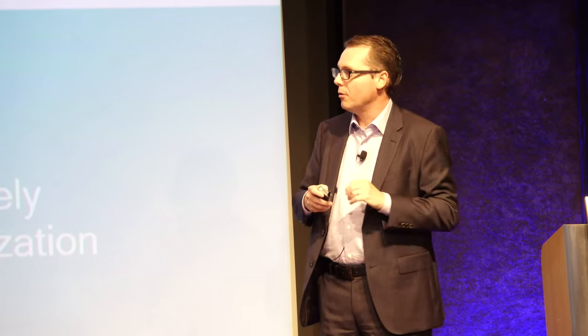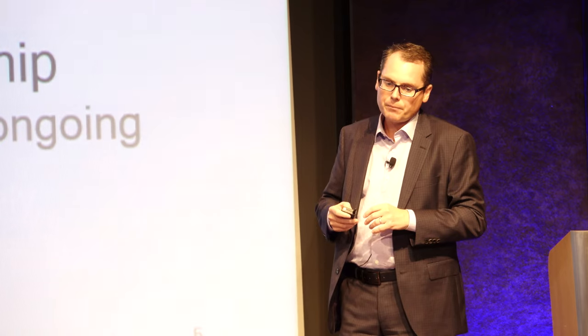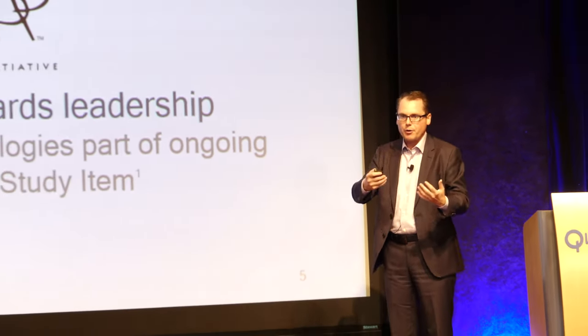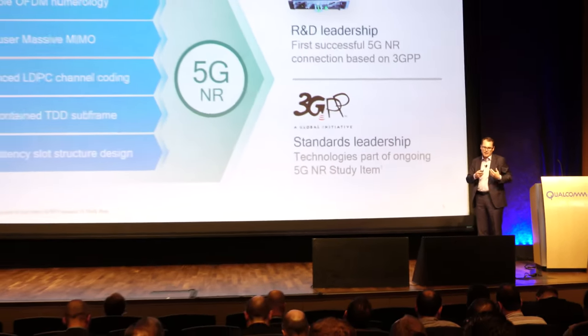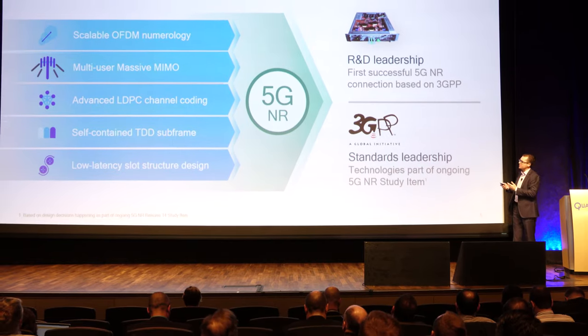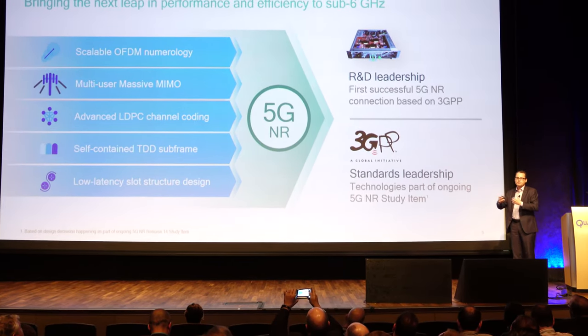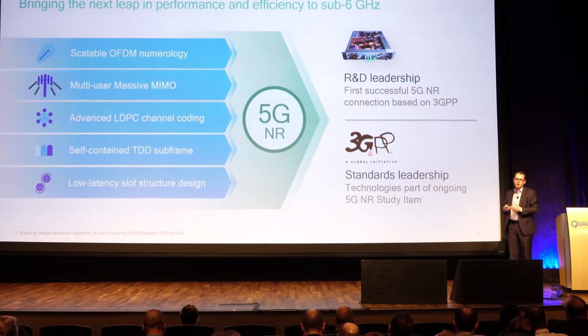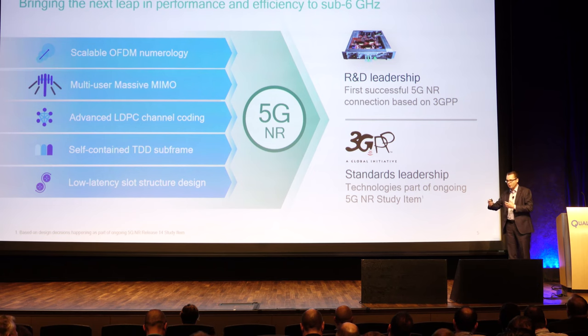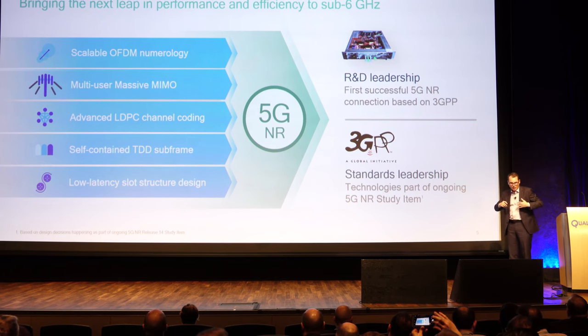The ability to design an end-to-end system is a larger perspective all the companies are taking, but from Qualcomm's standpoint this is where we're playing to our strengths in design, prototyping, standardization, and implementation. It's exciting to see how these techniques are getting incorporated into the release 14 study item decisions already. Key decisions include scalable OFDM numerology designed for different bands and bandwidths, enabling more spatial techniques like massive MIMO, and pushing the energy per bit — measuring in picojoules per bit — to increase throughput without significantly increasing battery consumption.